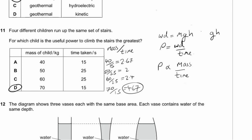A tip: if you're not sure about using proportions, you can make up a value for the height of the stairs — say 10 metres or even 1 metre — and calculate actual power values. The comparison will still work out the same and you'll get the same answer.